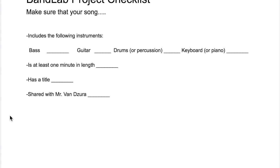Number three and number four are super easy. Number three is that you just need to make sure that your project has a title. To do that, if you remember you can check the tutorial, but you go to the top where it says new project and just change it to a new title. And last but not least, you need to make sure you share your project with Mr. Vanzura. There are directions on how to do that on the website or in the tutorial video, but just make sure that when your project is done, you share it with me so I can see it and make sure that you followed all the guidelines.